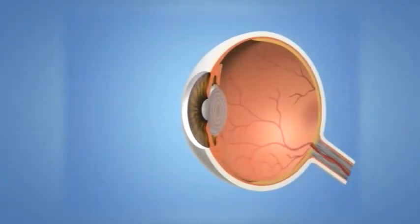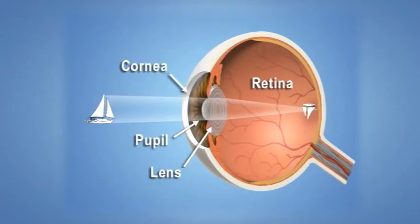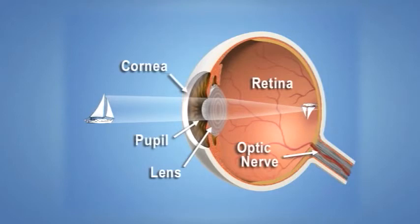To understand how we see clearly, we need to understand how the eye works. Light rays enter the eye through the clear cornea, pupil, and lens. These light rays are focused directly onto the retina, the light-sensitive tissue lining the back of the eye. The retina converts light rays into impulses sent through the optic nerve to the brain, where they're recognized as images. 70% of the eye's focusing power comes from the cornea and 30% from the lens.